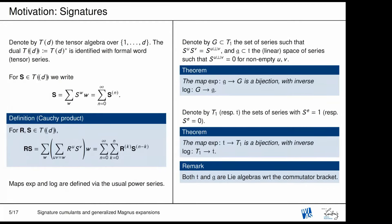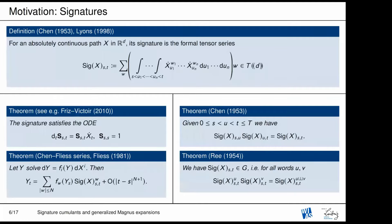So why am I introducing all this? It's because I want to talk about what the signature is. The signature is a specific word series or tensor series built out of a path, where the coefficients are given by iterated integrals of the path. The superscript w means you take the w^1 component: w is a word in symbols {1,...,d} indicating the dimensions of the space where X lives, and you take an iterated integral coordinated by the letters in your word.